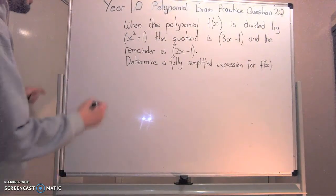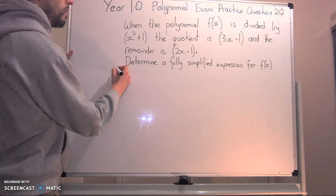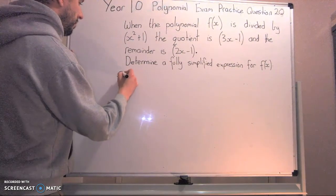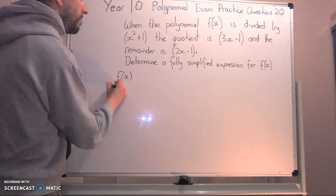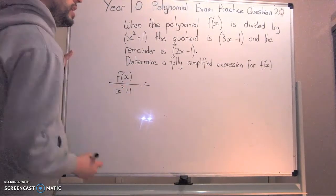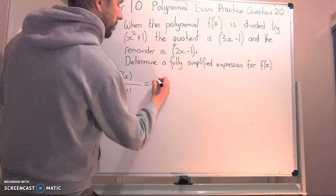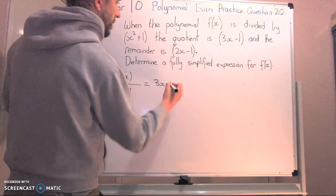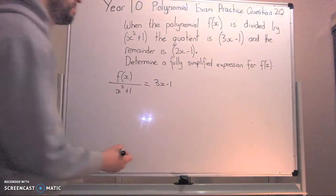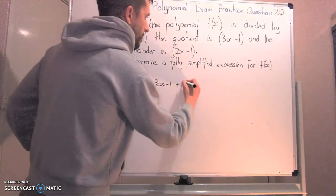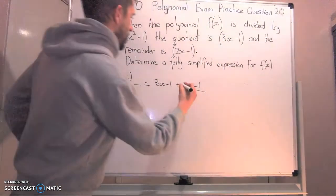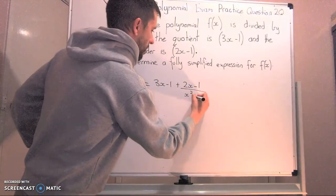Let's have a look at how we can write that. When the polynomial f(x) is divided by x squared plus 1, it equals the quotient 3x minus 1, and the remainder is 2x minus 1 over what we divided by, which is x squared plus 1.